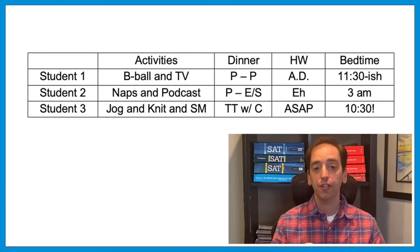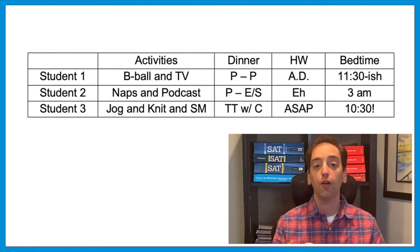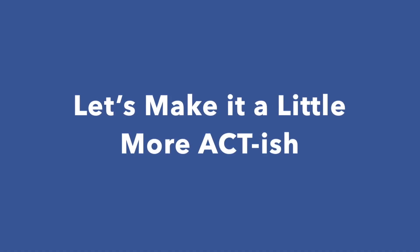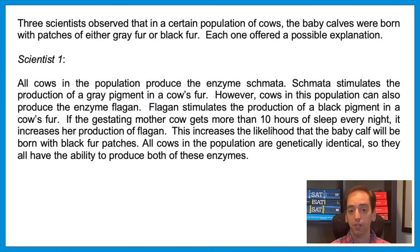Notice how much easier it is to digest all of this information when it appears in this format rather than in three dull paragraphs. This makes it much easier to compare and contrast the important details. So let's give this a try, but now let's look at a passage that's a little more ACT-ish. Let's read through a passage together, and after we finish, I'll give you a minute to come up with your own chart. Three scientists observed that in a certain population of cows, the baby calves were born with patches of either gray fur or black fur. Each one offered a possible explanation.